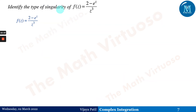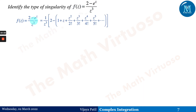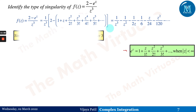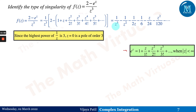Identify the type of singularity of f(z) = (2 − e^z) / z³. Expanding e^z and taking z³ inside the bracket, we find the highest power of 1/z is 3. Therefore z = 0 is a pole of order 3.